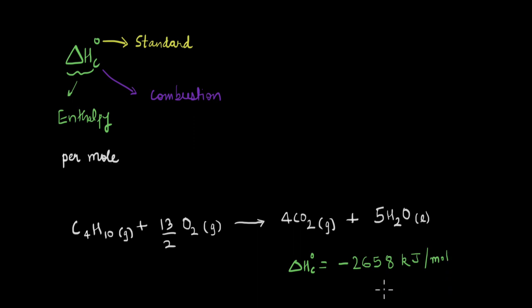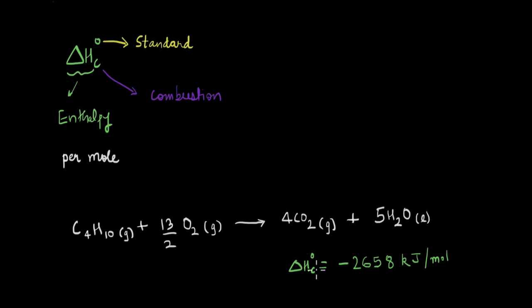The other thing to note is that this value is negative. When a substance undergoes a combustion reaction, energy is released — like when we are burning something. Because in combustion energy is released, it is an exothermic reaction, and by our sign convention the enthalpy is negative. Usually this value is negative, but sometimes — like in the case of nitrogen — it can be positive as well, because nitrogen does not easily undergo combustion and only does so at very high temperatures.